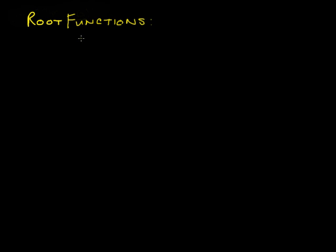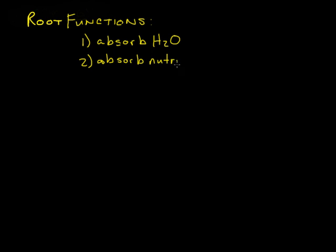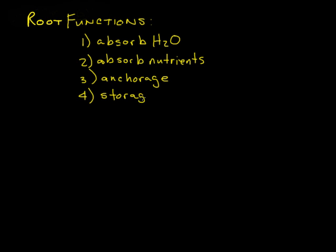The main functions of roots are to absorb water, to absorb nutrients, and to anchor the plant in place so that it's not flopping around or blowing around. Finally, many types of modified roots can serve as storage organs for the plant — long-term storage of things like carbohydrates and starches.